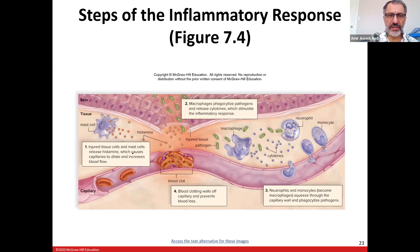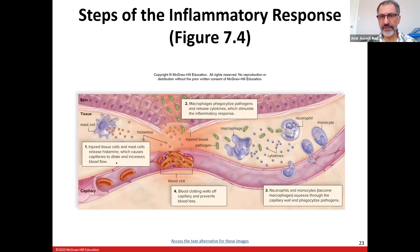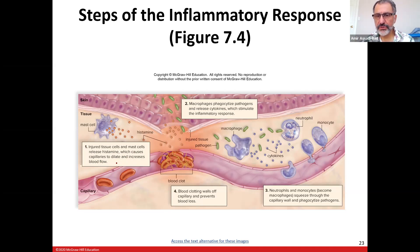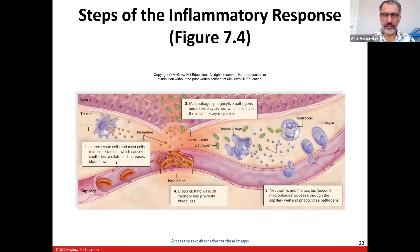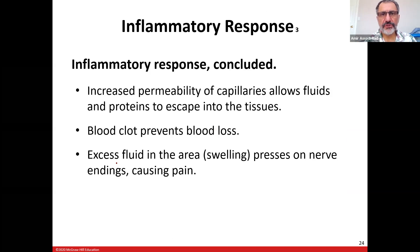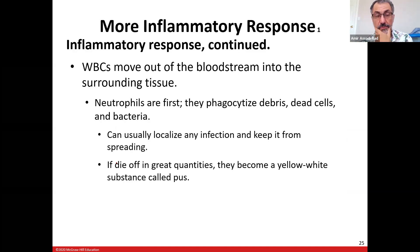When capillaries dilate, white blood cells such as neutrophils, monocytes, and macrophages leak out and come to the infection site. Macrophages phagocytize pathogens and release cytokines that stimulate the inflammatory response. In step three, neutrophils and monocytes become macrophages, squeezing through capillaries to phagocytize pathogens, and blood clotting occurs. When neutrophils become overwhelmed, they secrete cytokines — chemicals that attract more white blood cells such as monocytes.